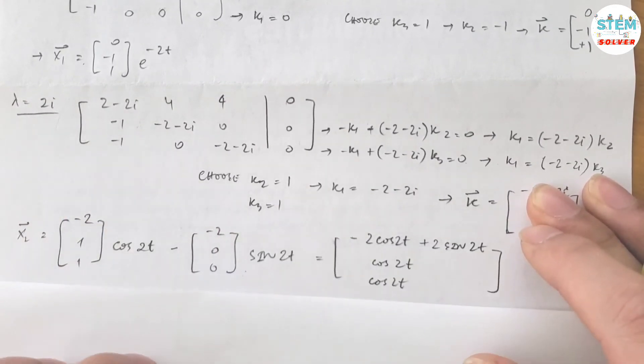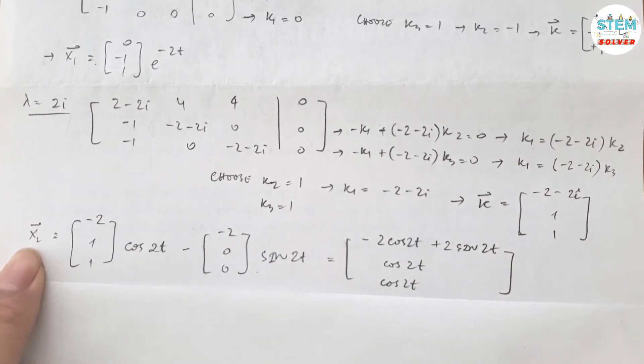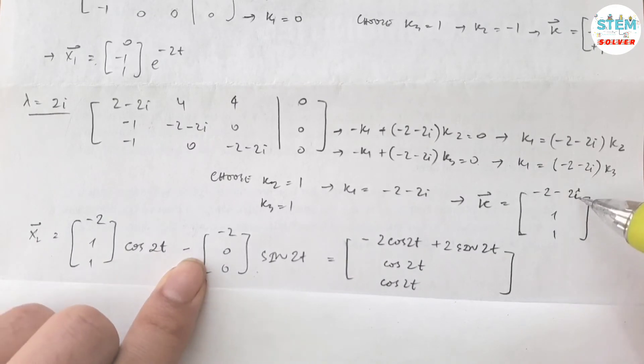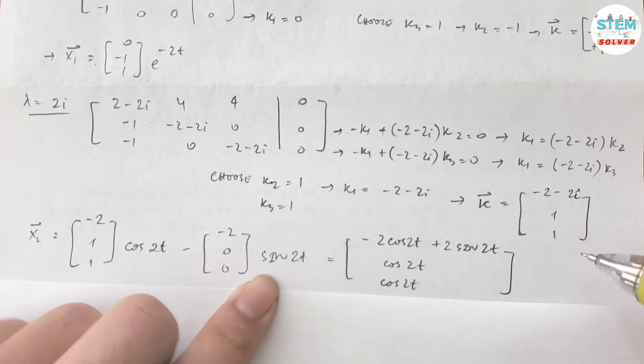Now, for vector x2, you are going to take the real part of vector k which is (negative 2, 1, 1), multiplied by cos2t minus the imaginary part of vector k which is (negative 2, 0, 0), multiplied by sin2t. You can stop here,